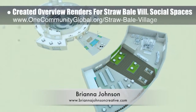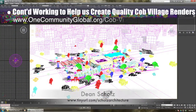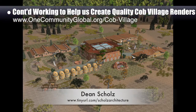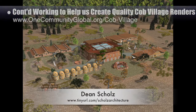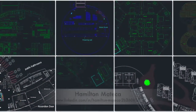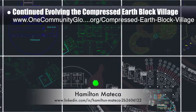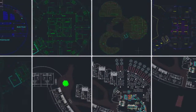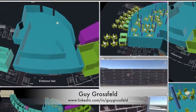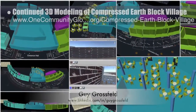Brianna Johnson, interior designer, created two new overview renders focused on the straw bale village pod 2 social spaces. Dean Schules, architectural designer, further developed the cob village pod 3 renders — update 35 of his work — focusing on fixing problems that caused computer crashes and a series of final render tests adjusting colors, shadows, and textures. Hamilton Matika, AutoCAD draftsperson and designer, continued evolving the compressed earth block village pod 4 — his seventh week — with updates to the public bathrooms area, driveway areas, and west and central social spaces on the second floor.